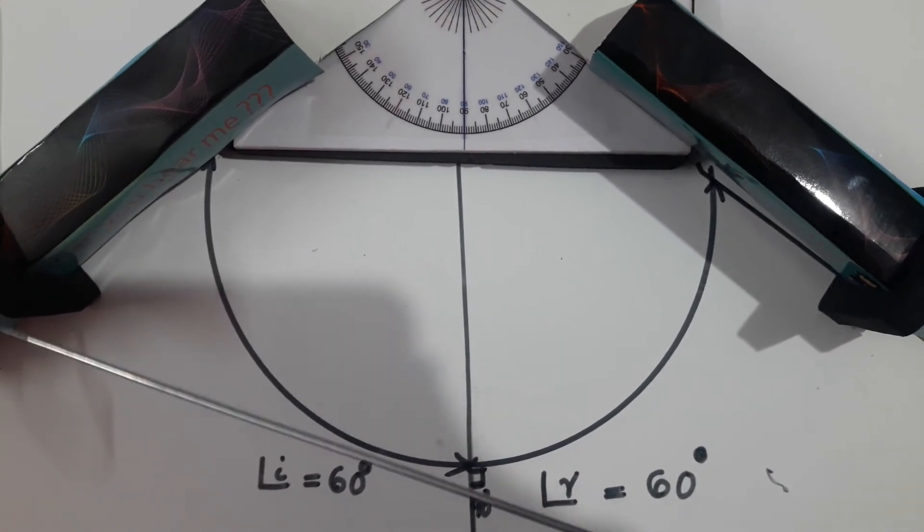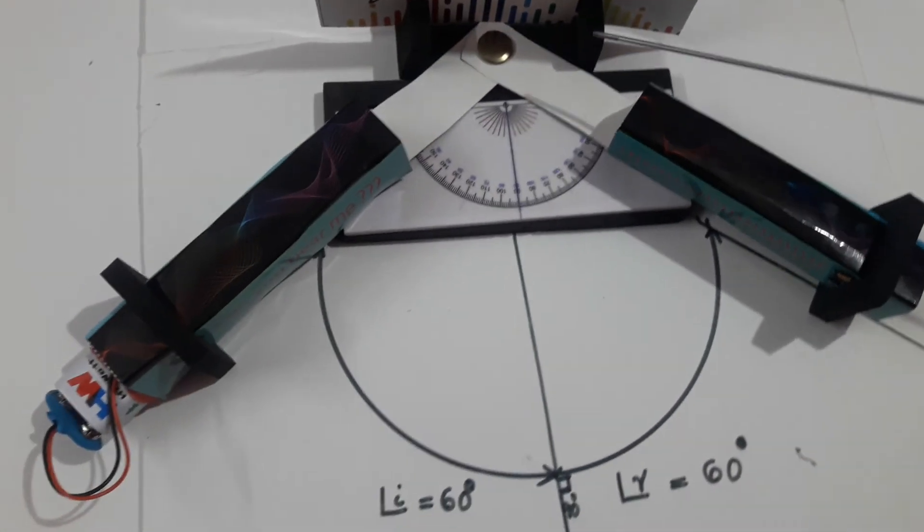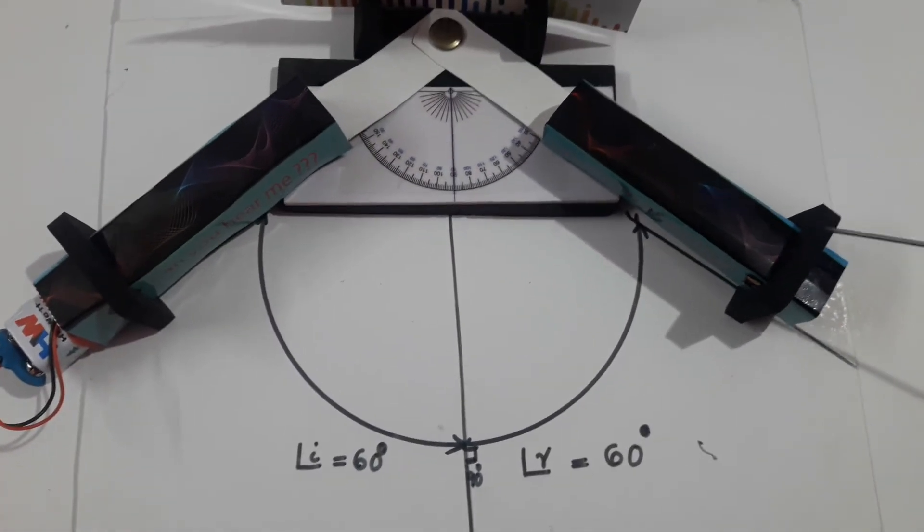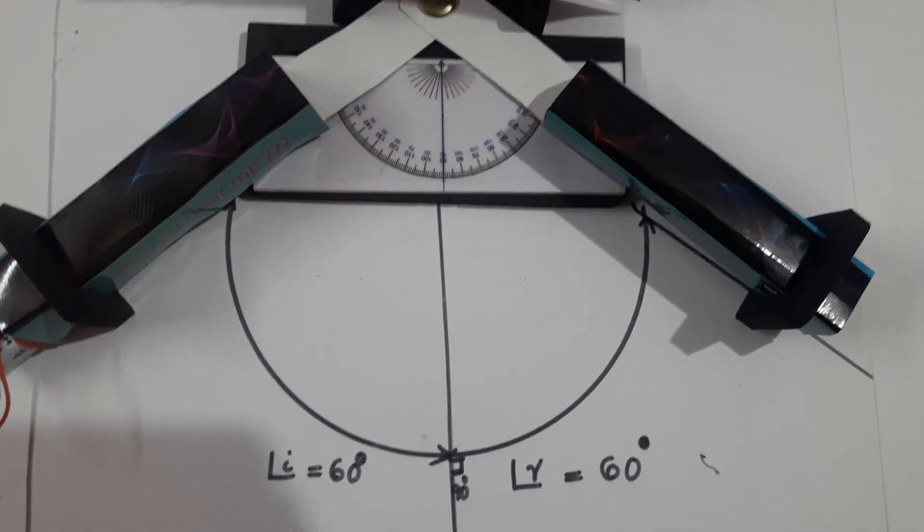Second law: the direction of incident sound, direction of the reflected sound, and the normal are in the same plane.